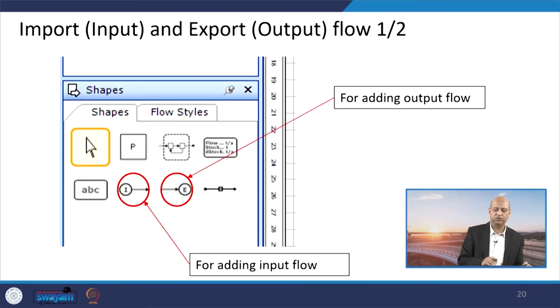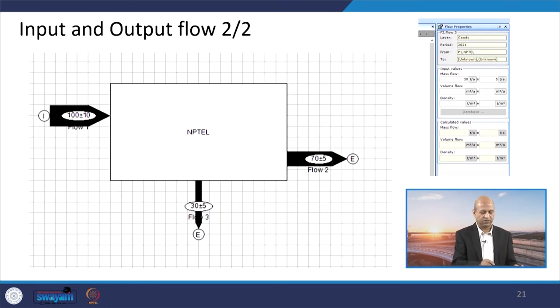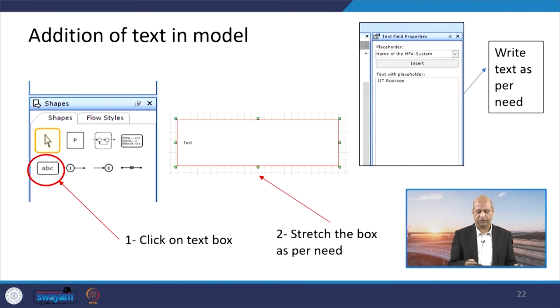When we talk about import or input and export or output related flows, these are the symbols or shapes. Like for import and for export, these you can use and you can see here like import related, export related, so that kind of things you can add and model you can make.